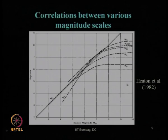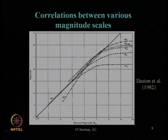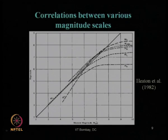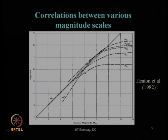Heaton et al. in 1982 proposed correlations between various magnitude scales with respect to moment magnitude. The dark solid line is the line of equality. At higher magnitudes, other scales like surface wave magnitude, body wave magnitude, and Richter magnitude tend to saturate. If you are unable to estimate Mw quickly at a location, you can use local or Richter magnitude Ml and use this correlation chart to obtain the corresponding value of moment magnitude for further design or analysis.